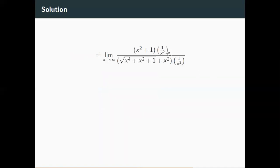So how does this simplify? Well, if I multiply out the numerator, I just get one plus one over x squared. And if I distribute this with the denominator, I get the square root divided by x squared, and then I get one. So that would look like this.